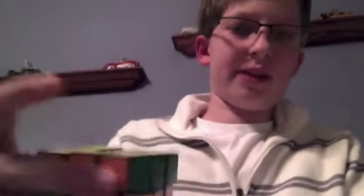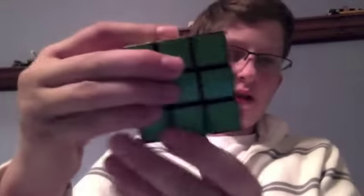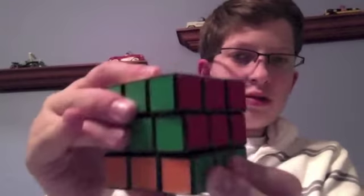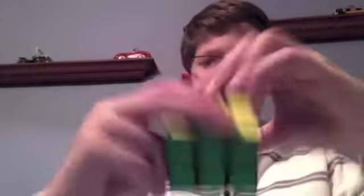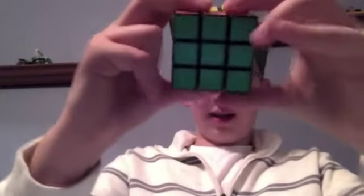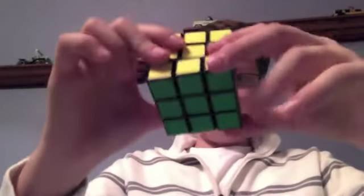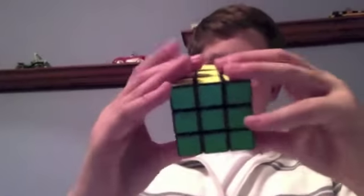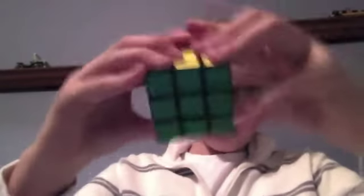Then we have up inverted and up clockwise, which is like this, or the opposite counterclockwise. Then we have the same for down. Then we have front, and front right here would be clockwise or counterclockwise. The front is the one that's facing you, obviously. And then we have the back.